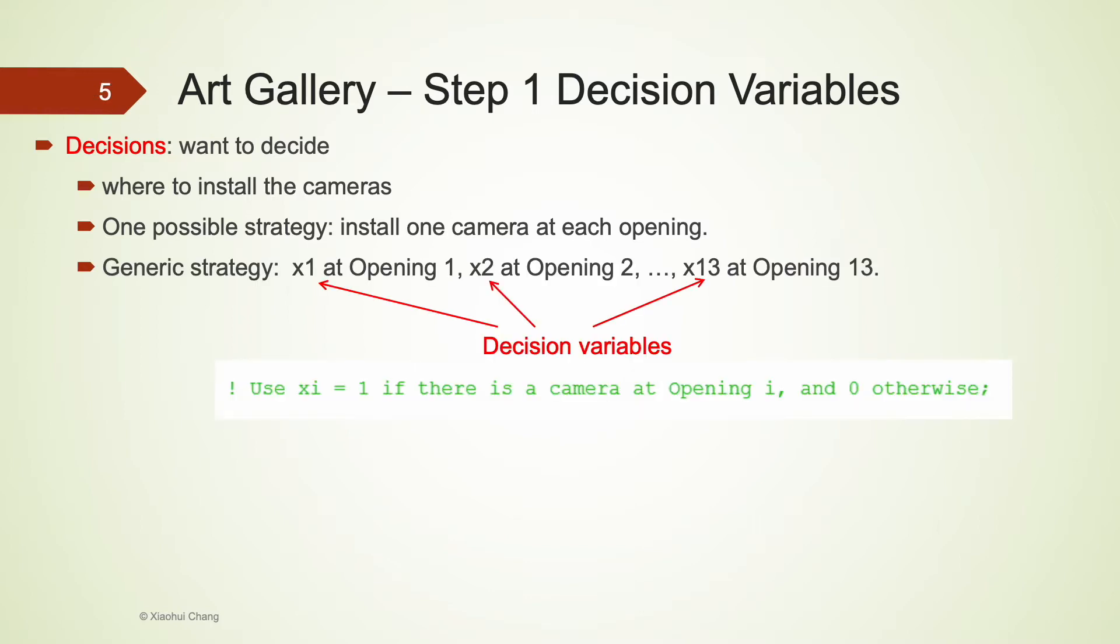We then move on to a more generic strategy that will be helpful for defining the variables. The generic strategy is to consider all 13 openings separately. For each opening, we could install or not install a camera at that opening. So this is a yes or no decision. We can use 13 binary variables at 13 openings to represent this strategy, and these 13 binary variables are our decision variables.